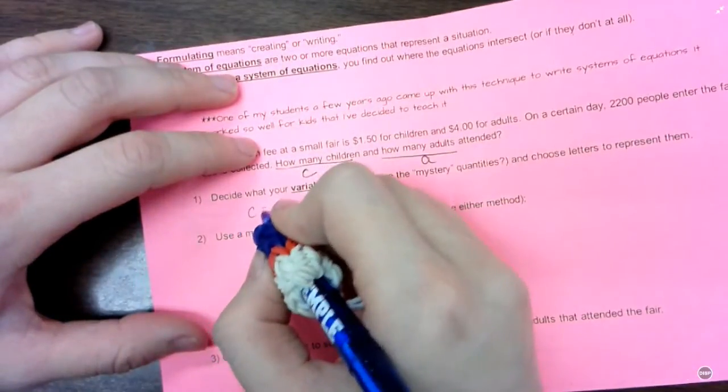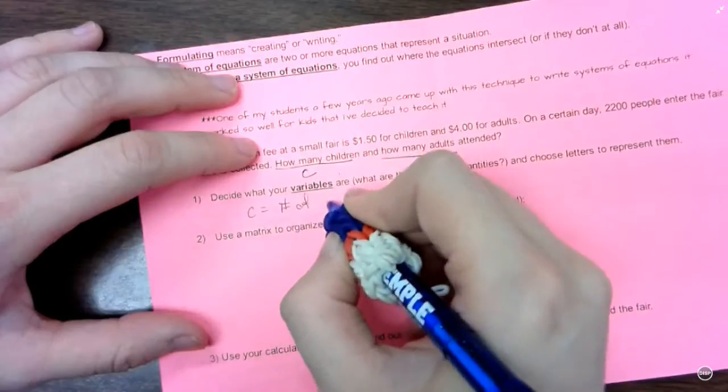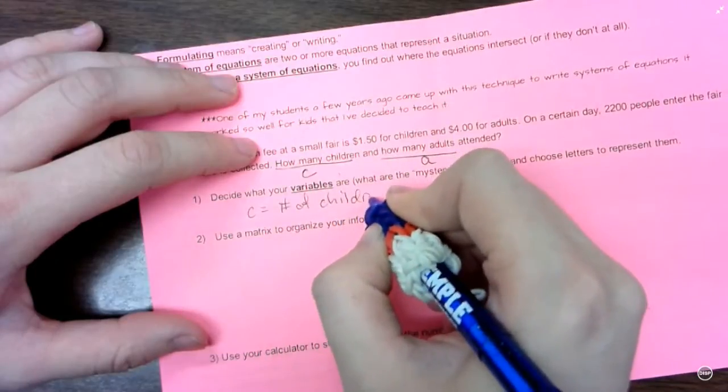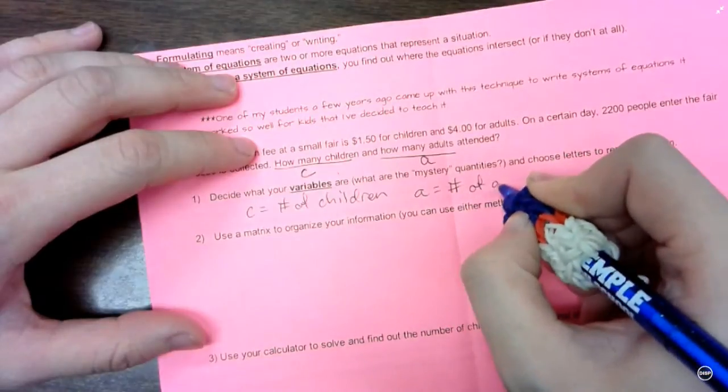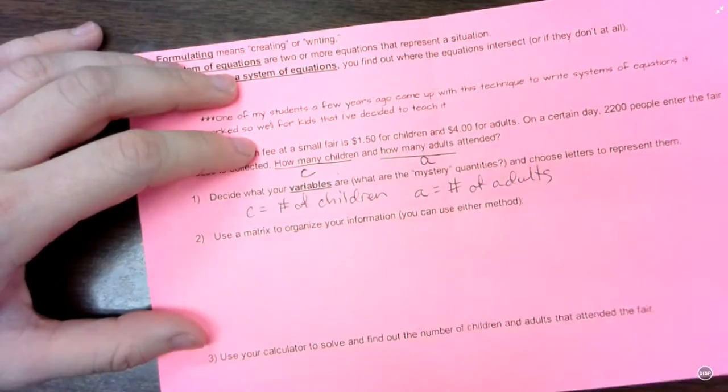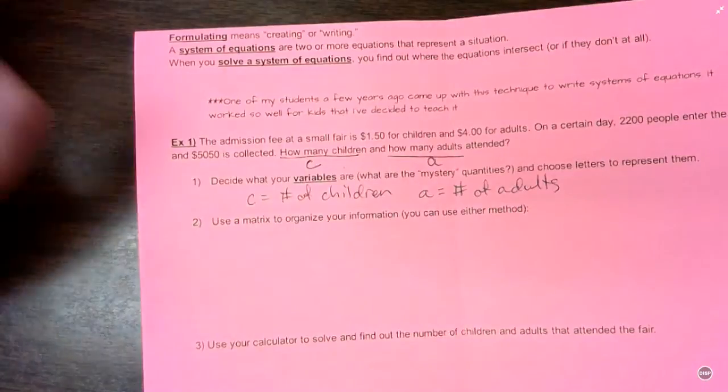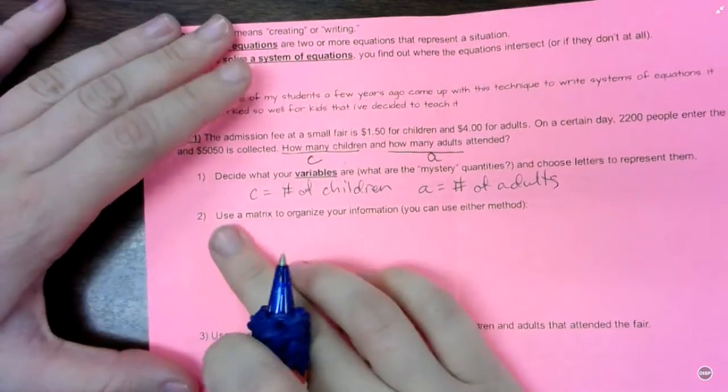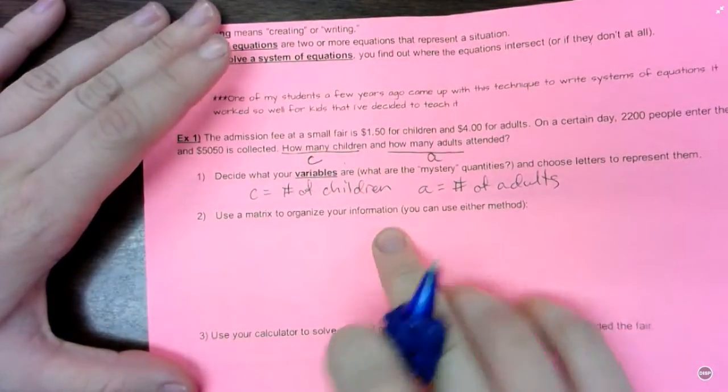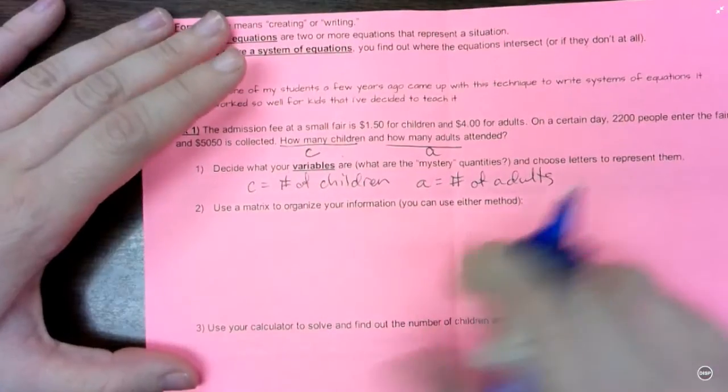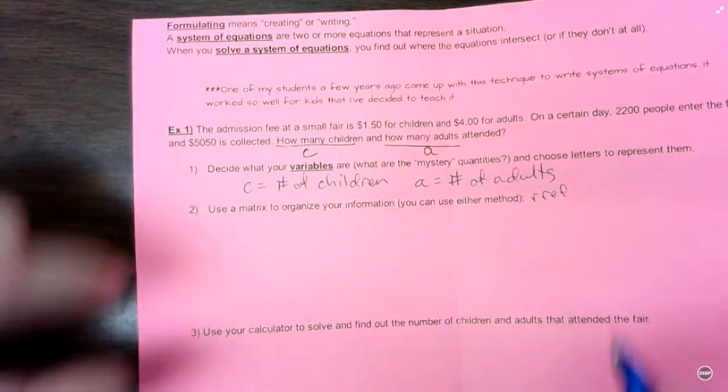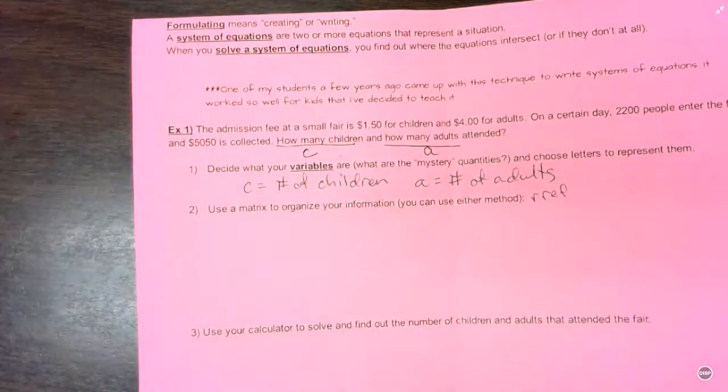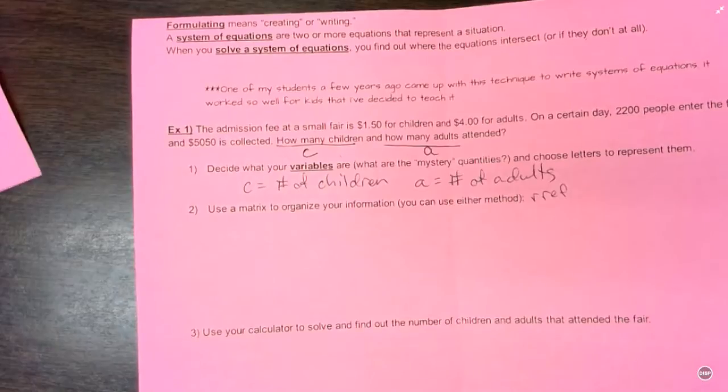So I'm just going to do C as number of children and A as number of adults. So those are my two variables. Then we're going to use a matrix to organize your information. Now you can use either method you want. I prefer reduced row echelon form, which uses just the one matrix. But if you prefer the other method, that's fine too.